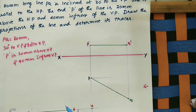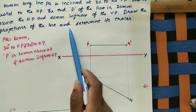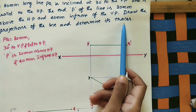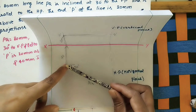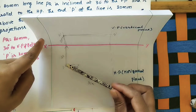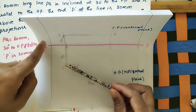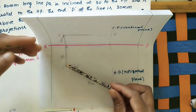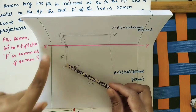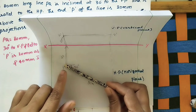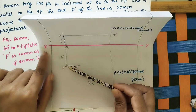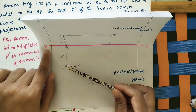Now find the traces. Traces are the intersection points of the extended line with the reference planes. If you extend this line, it will intersect the vertical plane at one point — this intersection point is called the trace. Since it comes on the vertical plane, it is the vertical trace. In the top view we see the true length, so extend this line to get the intersection point.